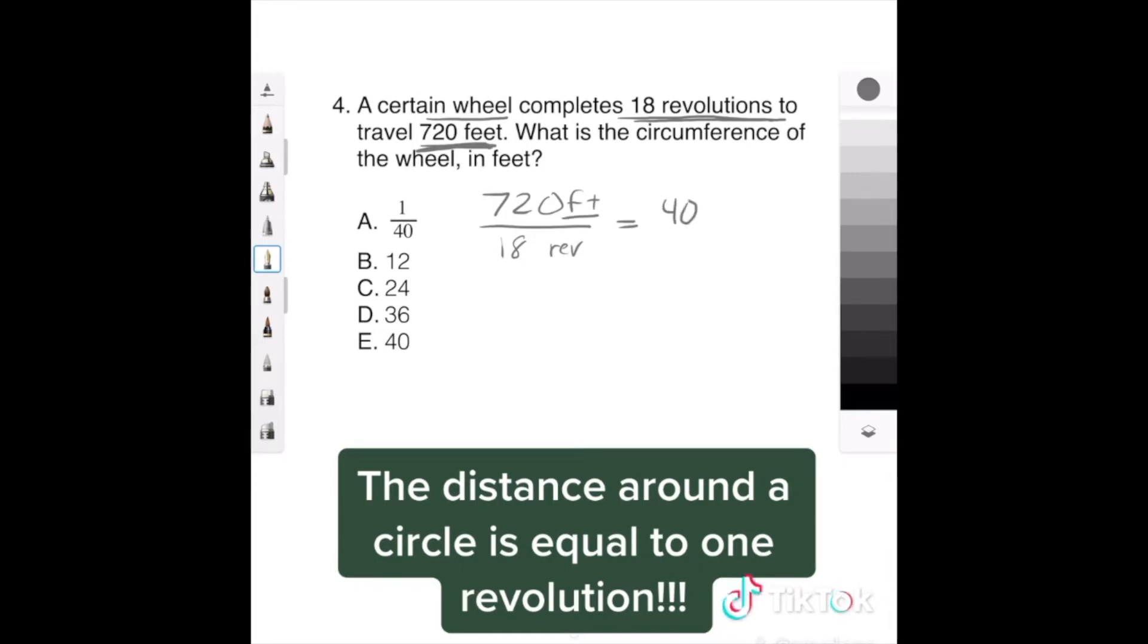And then our units would be feet per revolution, which literally means that this wheel goes 40 feet every one revolution.